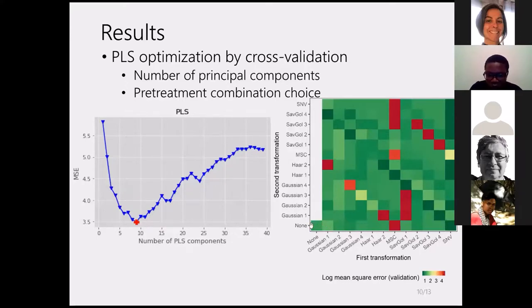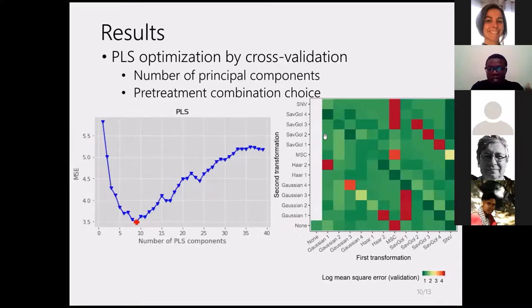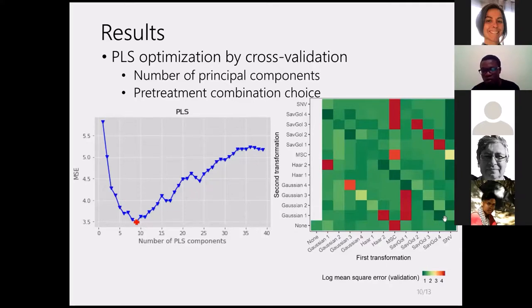Here we have the raw spectra when no pre-treatment is applied. When we apply Gaussian smoothing first, and then Savitzky-Golay 4th derivative second, we see that this reduces the mean square error. Where the color is most green, this indicates the best pre-treatment combination selected for PLS calibration.